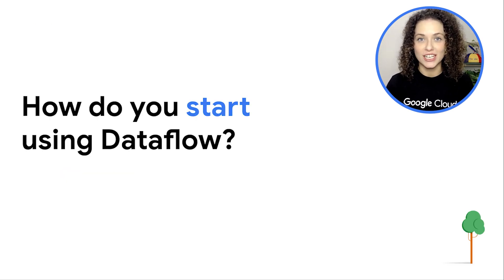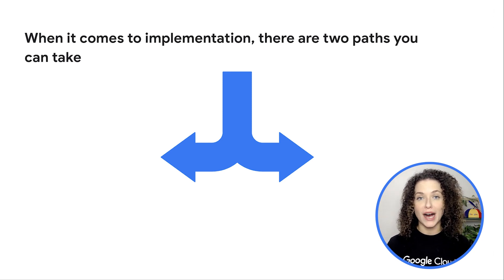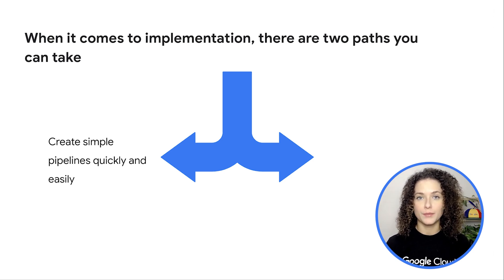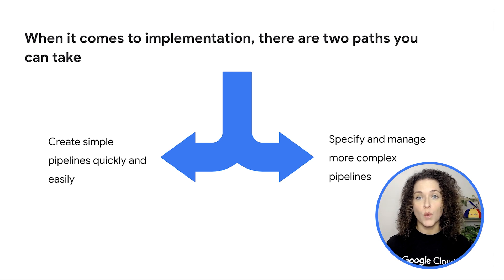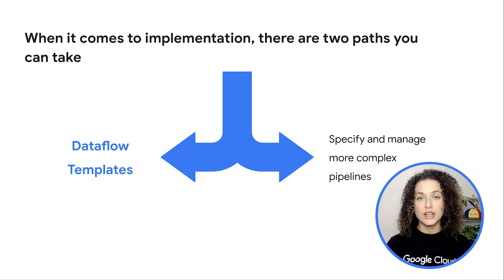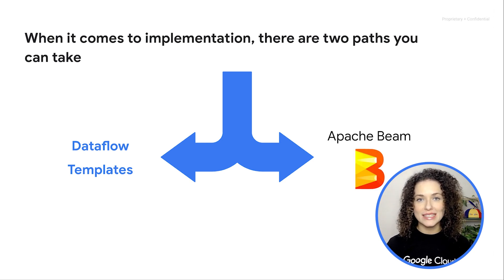So how do you start using this technology? When it comes to implementation, there are two pathways you can take. The first is if you have simple requirements for your pipeline with fairly trivial transformations and you want to get them up and running quickly and easily. The second path is if your ETL processing requires more complicated transformations with more intricate management of pipelines. If path one sounds like the right fit, use our pre-built Dataflow templates right from the console or with the Google Cloud API. If path two is more suited to your needs, you can start building your pipeline with the Apache Beam SDK and run that on Dataflow.